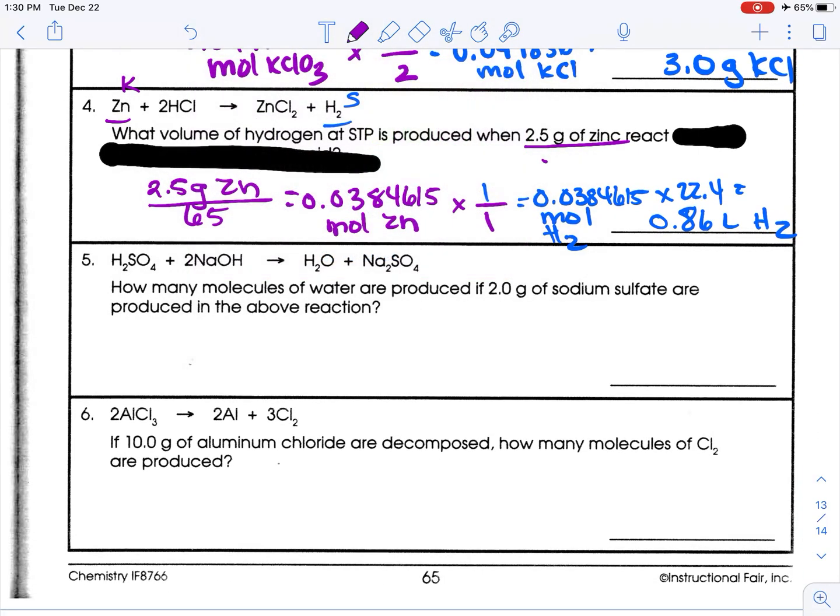Now we're getting some new stuff. How many molecules of water are produced if 2 grams of sodium sulfate are produced in the above reaction? So 2 grams of sodium sulfate is our known, and we seek water. Let's talk about the game plan this time. We have grams, so we need to go from grams to moles, and then we'll go to moles of something else, and then we're going to go to particles. From grams to moles, we divide by GFM, multiply by the conversion factor, but then to go from moles to particles, we're going to multiply by Avogadro's number, 6.02 times 10 to the 23rd. So that's new.